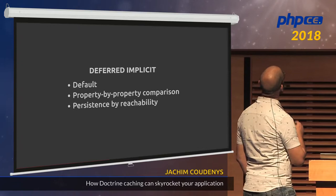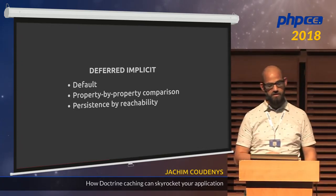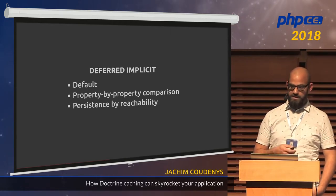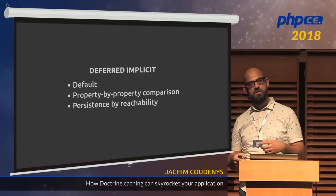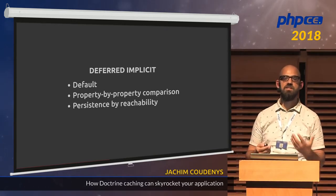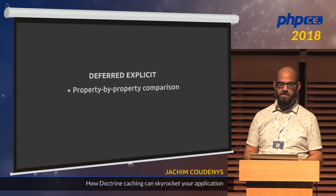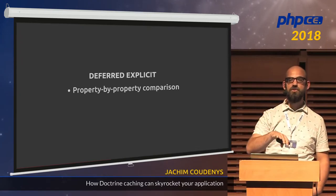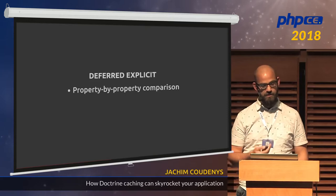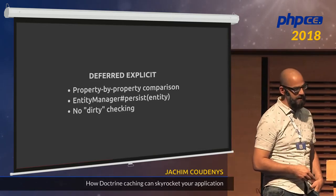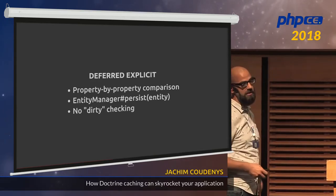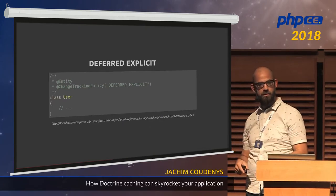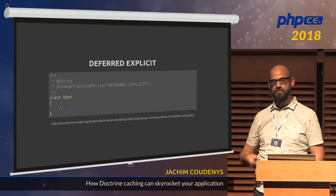We also have deferred-explicit, which is the same but only acts on objects we explicitly persist in the entity manager — there's no dirty checking of other objects. You have to add it to the persist method for explicit tracking. We can change the track policy by adding a new mapping annotation — you can use XML as well. The last tracking policy is notify, which works the other way around: from within the entity you have to notify some listeners that something has changed, using the NotifyPropertyChanged interface. You then have to publish every change you make to the entity to the listeners. This is more performant since Doctrine doesn't have to inspect every property, but it's a bit annoying that you have to manually signal changes.